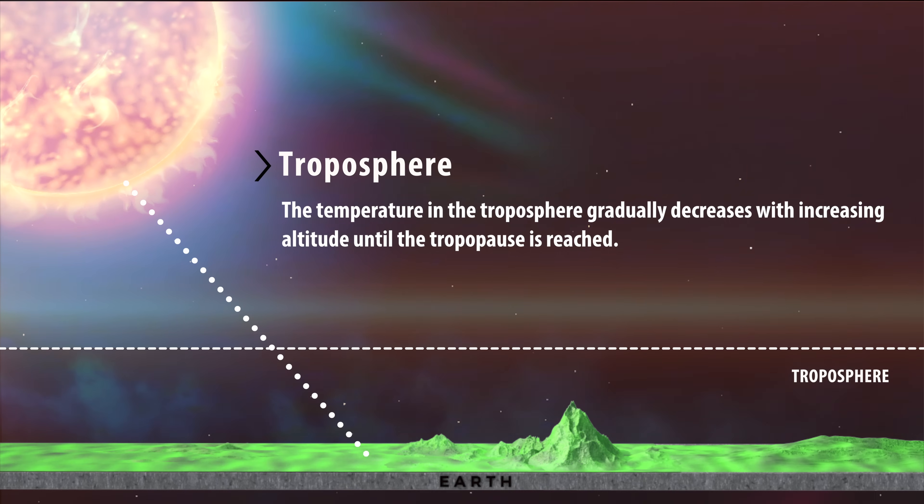The temperature in the troposphere gradually decreases with increasing altitude until the tropopause is reached.